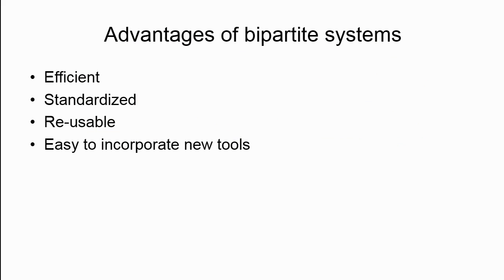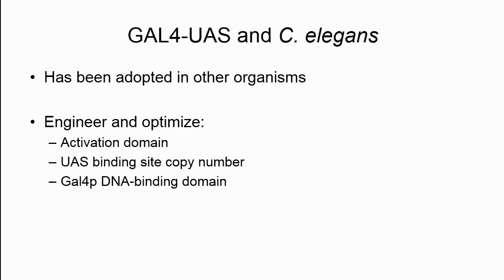Now things become a lot easier — you don't have to build every pairwise combination of promoter and gene. You build a GAL4 driver for all promoters you want to study and a UAS effector for all genes. This greatly reduces the work but gets you the same result. Once built, these strains become standardized, reusable community reagents. You don't have to worry about cloning the right promoter or injection concentration. And it's easy to incorporate new tools — a new promoter, gene, or effector integrates into existing strains.